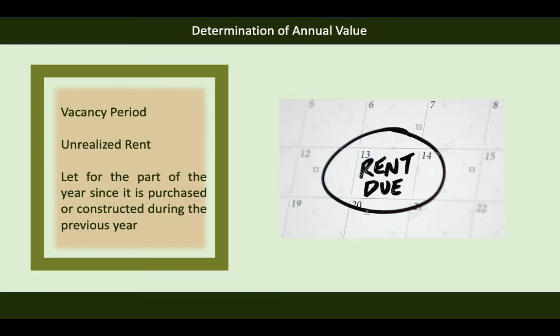Unrealized rent is rent which is not actually received from the tenant — the tenant is a defaulter and not paying rent properly. To claim the unrealized rent, the assessee should prove satisfaction of Rule 4: that the tenancy is bona fide, that the tenant has vacated or steps have been taken to get the house vacated, the tenant is not occupying any other house owned by the assessee, and that all efforts to realize the rent have failed or the assessing officer is satisfied there is no way to recover it. Unrealized rent of an earlier year is not deductible.